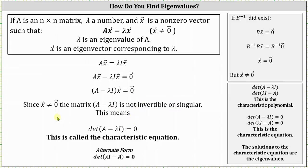I also want to mention that if you look at different sources, you'll see the characteristic equation written in a slightly different form where the matrix is lambda times the identity matrix minus matrix A. Looking at the notes on the right, if we have just a determinant we have the characteristic polynomial, and if we have the determinant equal to zero we have the characteristic equation. The solutions to the characteristic equation give us the eigenvalues for the given matrix A.